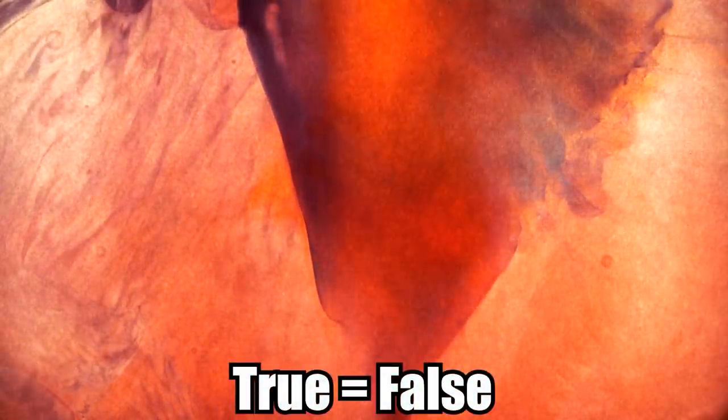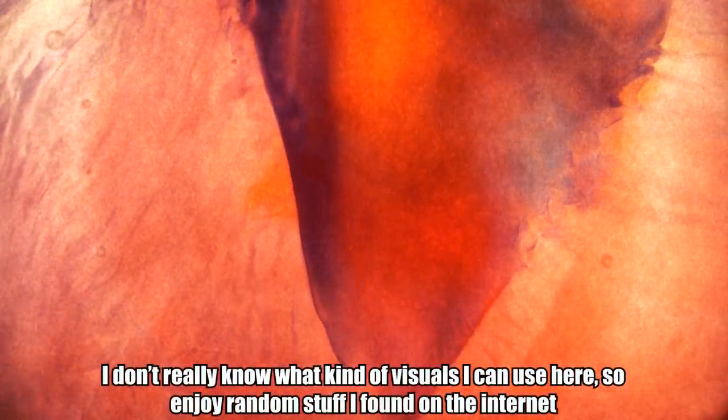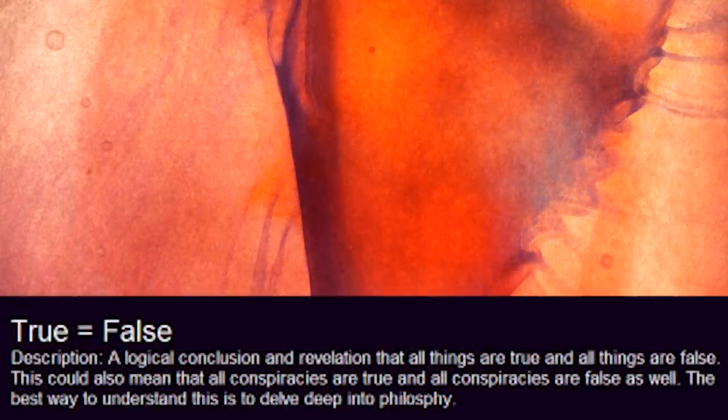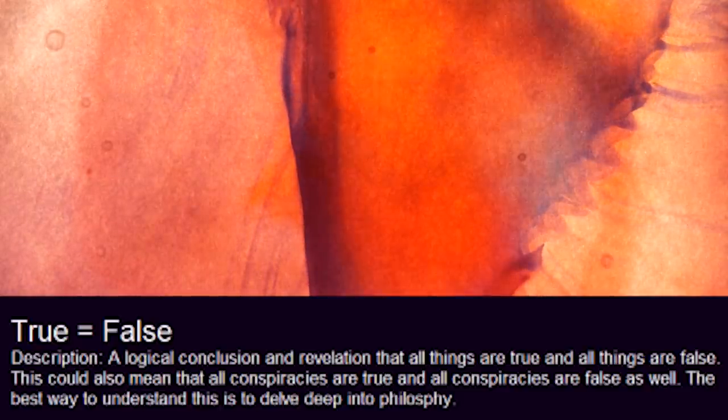We're getting quite deep down the iceberg because the next entry is that true equals false — the logical conclusion that all things are true and all things are false, meaning all conspiracy theories are both true and false. This entry suggests delving into philosophy to understand it. Do we have any philosophers in the crowd? Because this is gibberish to me. Something being true and false is mutually exclusive by definition — if something happened, it happened; if it didn't happen, it couldn't have happened.